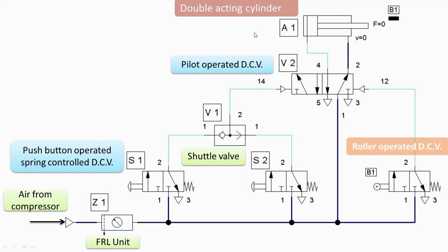A1 is the double acting cylinder. There is a roller operated direction control valve which will control the right envelope mode. One important thing is that you can operate either S1 or S2 to get the left envelope mode, while the right envelope mode is obtained by the roller operated direction control valve, and this operation is triggered by the piston rod.